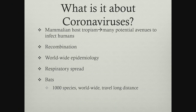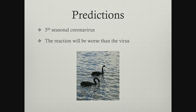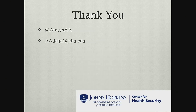What is it about coronaviruses? Multiple mammalian hosts, the ability to recombine, ability to move from host to host, worldwide epidemiology spread through the respiratory route, and bats as a massive species that can spread viruses very far. A couple of predictions: I think this is going to become the fifth seasonal coronavirus — I don't think this is going to be something that's containable. I think it's going to circulate along with our other coronaviruses. And I also think, like many pandemics, that the reaction will be worse than the virus. It's the government actions that are not science-based that are going to magnify the impact, the economic losses, and the societal disruption from this virus. I hope that was useful and gave you some context.